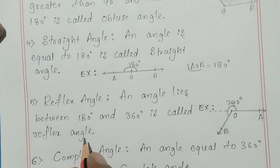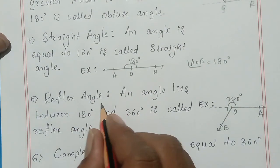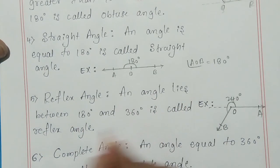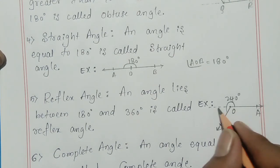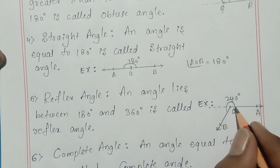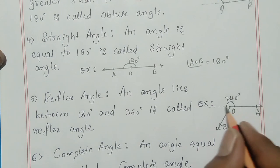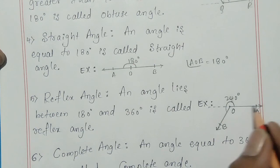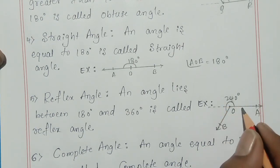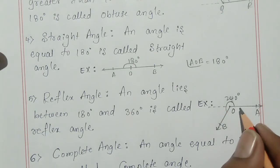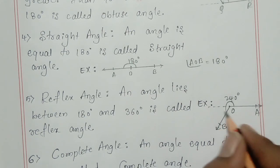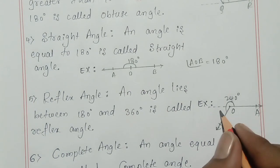Next is reflex angle. What is a reflex angle? An angle that lies between 180 degrees and 360 degrees is called a reflex angle. From here to here is 180 degrees, and from here to here is 360 degrees. All angles in this region are reflex angles.